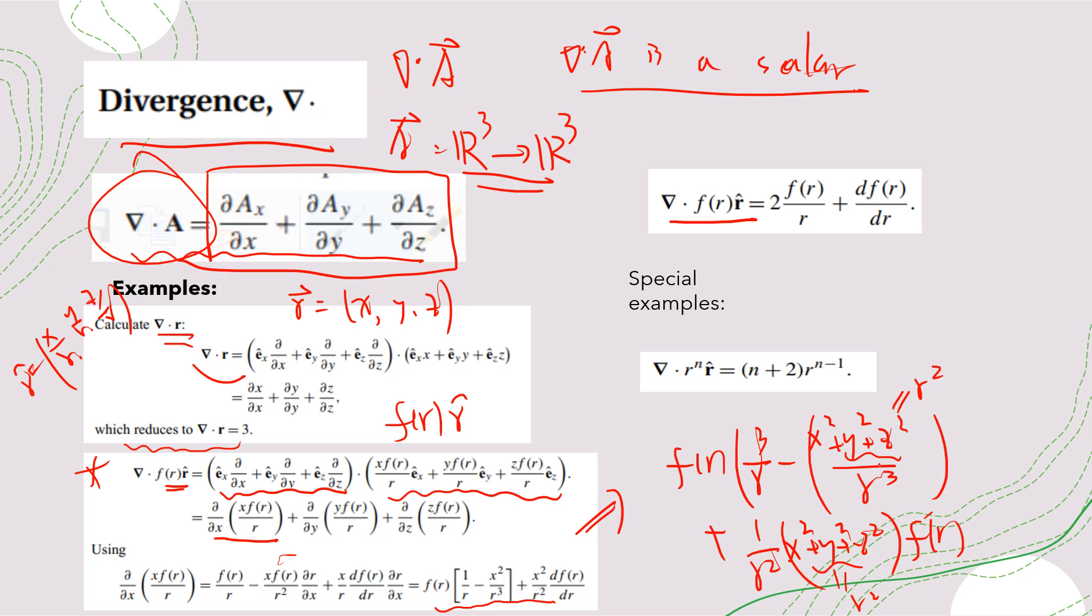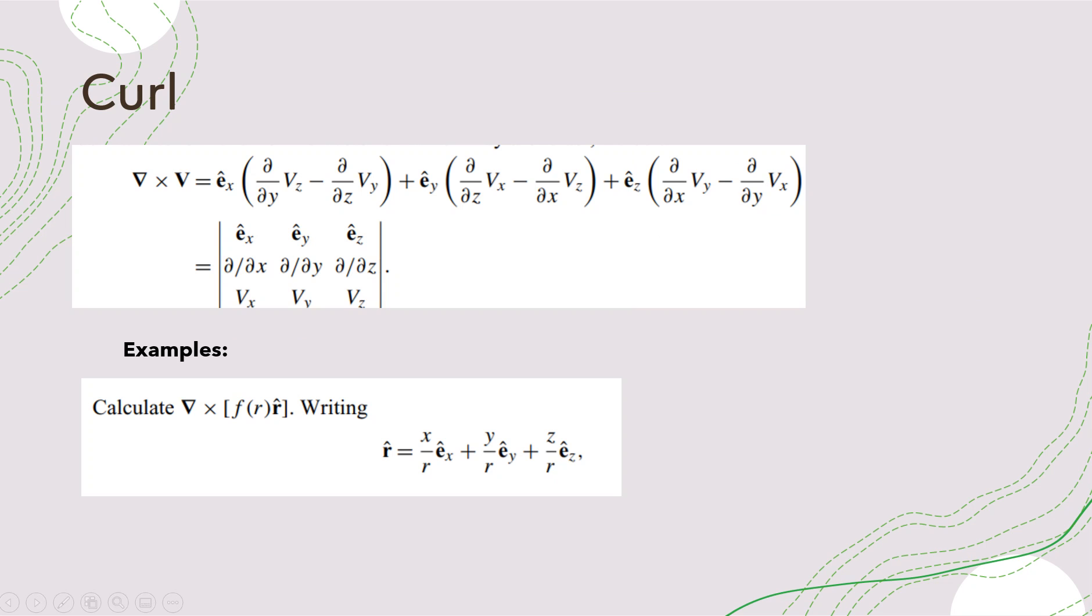So right, so these two combinations will give you the first term, right? 3 minus 1 becomes 2. And this R squared will cancel. So you have df of R over dr. Okay, so this is also a really good example that you can check. For special cases, you get that f of R to be R to the n. Then you get this.